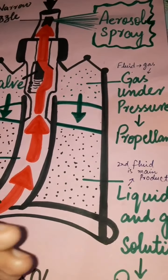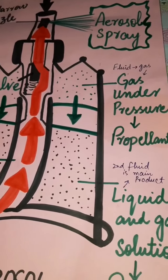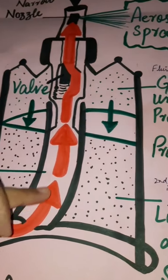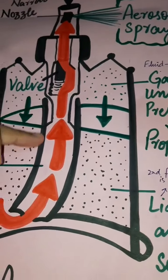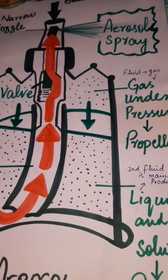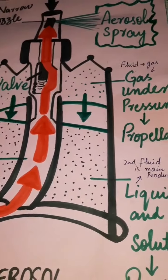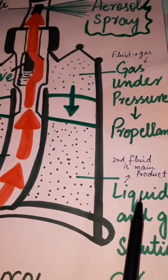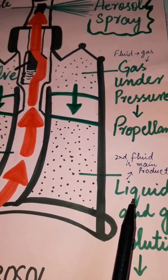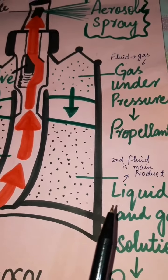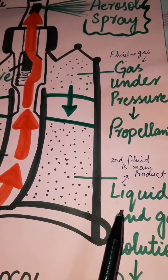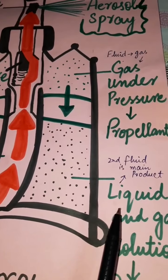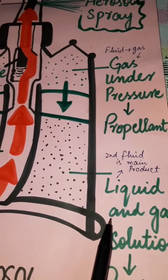This fluid is called the propellant — it propels the main product into a long tube and out through the nozzle. The second fluid is the main product, which is an aerosol product that may be a mixture of liquid and solid particles.